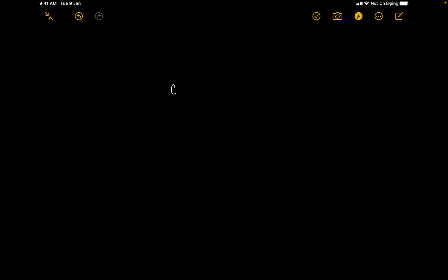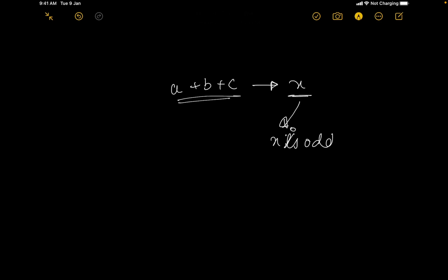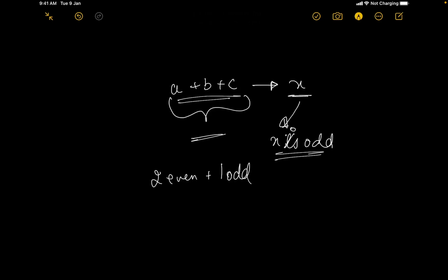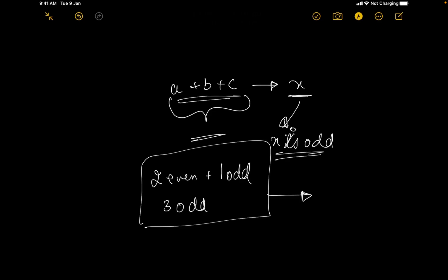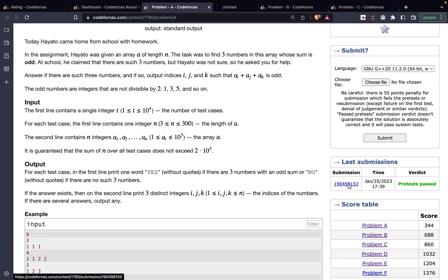For the sum of three numbers a, b, c to be odd, either all three must be odd, or exactly two must be even and one odd. Two even plus one odd gives odd, and three odds also give odd. That's the basic condition we need to check.